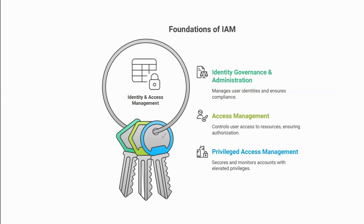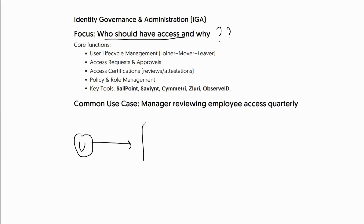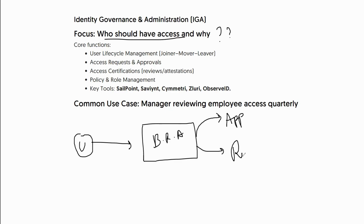Now let's dive deeper into Identity Governance and Administration. IGA focuses on who should have access and why — role-based access, attribute-based access, and the reasoning behind them. It ensures that from the time a user joins an organization and is given birthright access, through requesting access to various applications and getting different roles, having their access reviewed, and eventually when they leave triggering the leaver process and deprovisioning — this entire user lifecycle is managed.